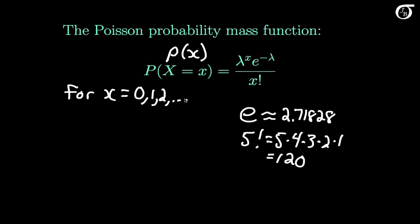There is no upper bound on the value that x can take on, but depending on the situation, the probabilities eventually get very small for large values of x. The mean of the Poisson distribution is lambda — mu, the mean of the random variable x, equals lambda. We could use mu as the parameter and some sources do, but we often use lambda for the Poisson distribution. The variance of the Poisson distribution, sigma squared, is also equal to lambda. For the Poisson distribution, the mean and the variance are equal.